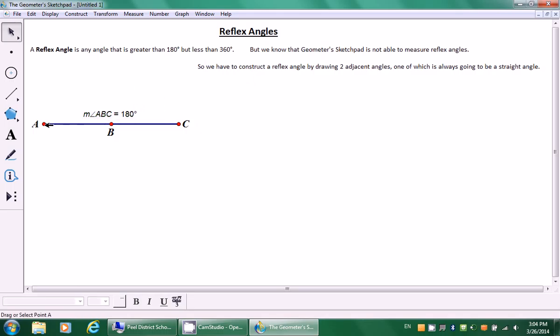Let's measure the straight angle. Click back on the selection arrow, go Endpoint, Vertex, Endpoint and go Measure Angle. So we have angle ABC is a straight angle, right here, 180 degrees.